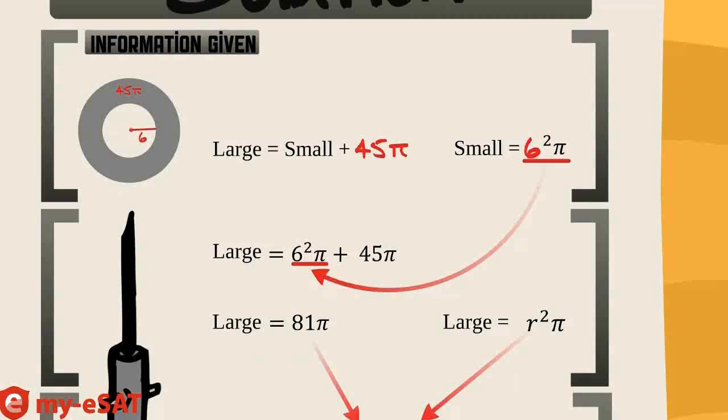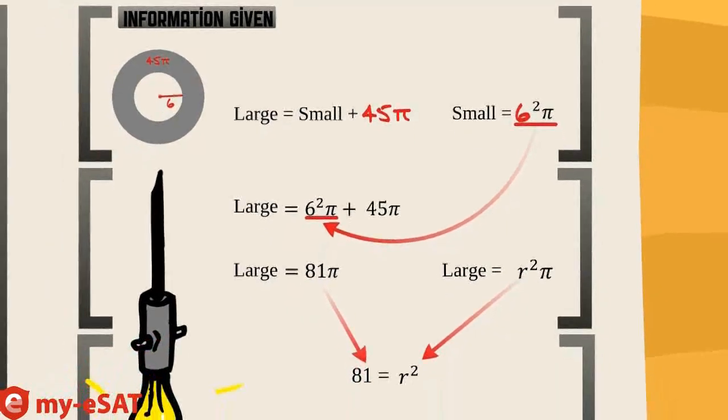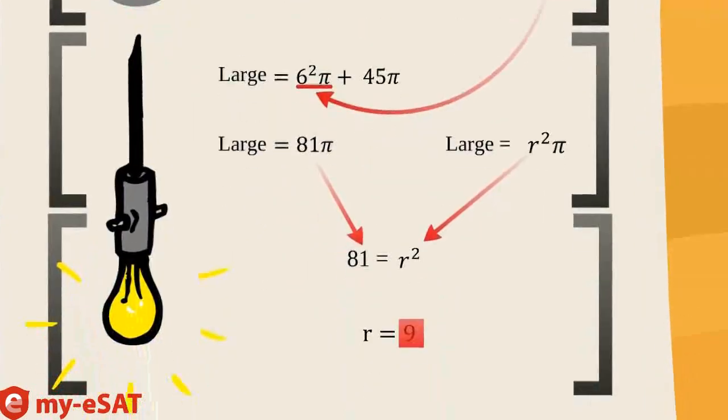Okay, great! Now that we know the area of the large circle, all we have to do is plug that into our area formula to find r, the radius. And we get that r is equal to 9.